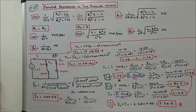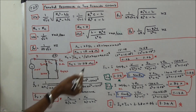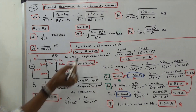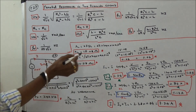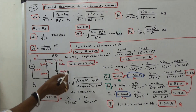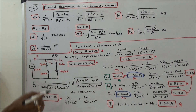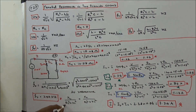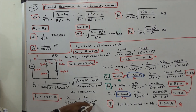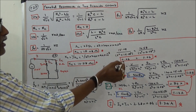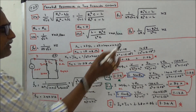Next we calculate X_L: X_L = 2πFL = 15.08 ohms. X_C = 1/(2πFC) = 16.58 ohms. At resonance, the condition X_L / (R_L² + X_L²) = X_C / (R_C² + X_C²) must hold. Calculating both sides, each value is 0.06, confirming resonance.